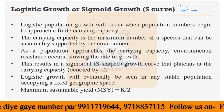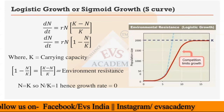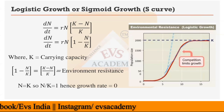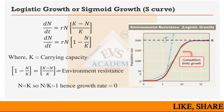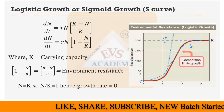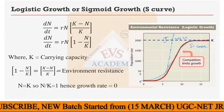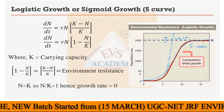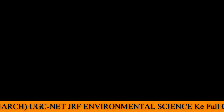Let me show you the graph. This is the sigmoid growth or S-curve. The growth of population would follow this S-shaped path — not like the J-curve. The J-curve we have already discussed. Right now we move ahead to the S-curve or logistic growth model.